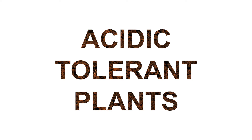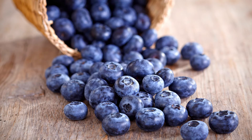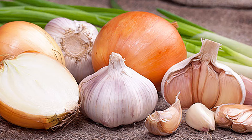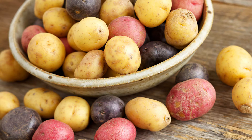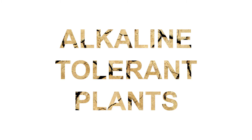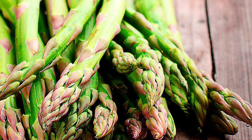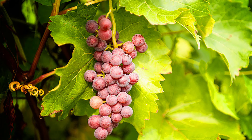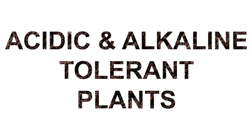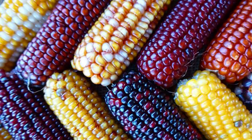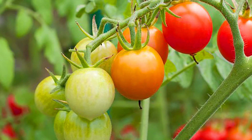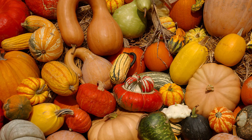Acidic tolerant: blueberries, beans, onions and garlic, peas, potatoes. Alkaline tolerant: artichokes, asparagus, cabbage, grapes, parsnips. Acidic and alkaline tolerant: carrots, corn, tomatoes, turnip, winter squash.